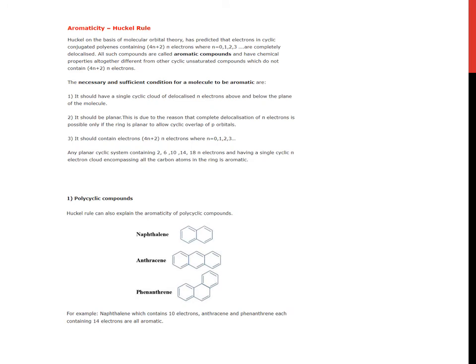Aromaticity, that is Huckel rule. Huckel on the basis of molecular orbital theory has predicted that electrons in cyclic conjugated polyenes containing 4n plus 2 pi electrons, where n equals 0, 1, 2, 3, are completely delocalized. All such compounds are called aromatic compounds and have chemical properties altogether different from other cyclic unsaturated compounds which do not contain 4n plus 2 pi electrons.